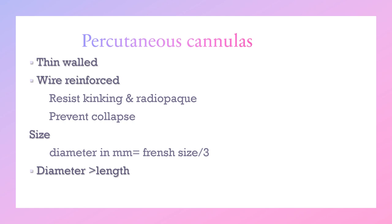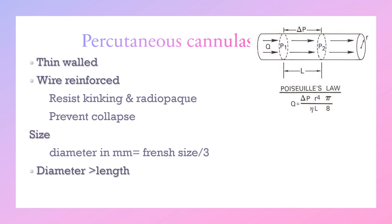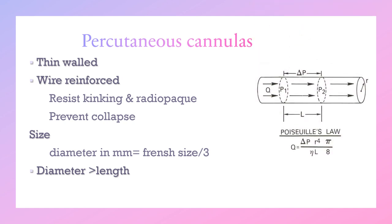The size of the cannula refers to the outer diameter, which can be expressed in French units — each 1 mm is equal to 3 French. The diameter of the cannula is very important in determining flow, more so than the length. Based on Poiseuille's law, flow is proportional to the 4th power of the diameter. Even cannulas of the same size from different manufacturers can have different flow and pressure drop characteristics.